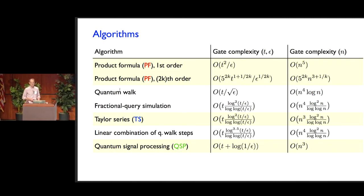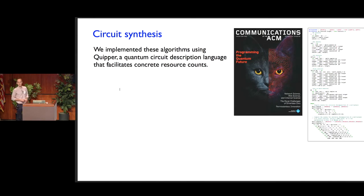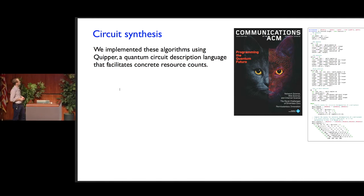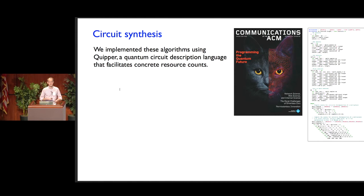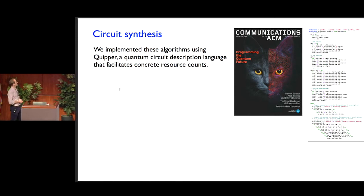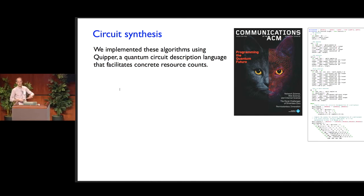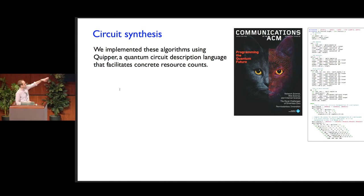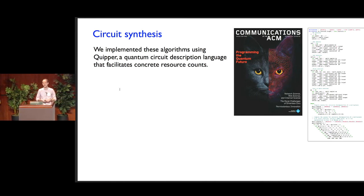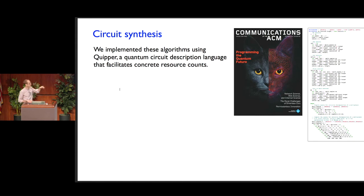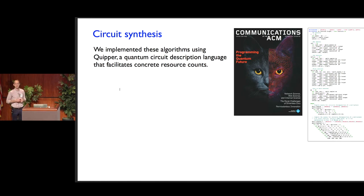What we have done is to really implement these algorithms in a very concrete way, using a quantum programming language called Quipper, which was developed in part by Julian, one of my co-authors, along with Peter Selinger and others. This is a way of writing software code that describes a quantum algorithm in a fully explicit way that can then be compiled into an explicit sequence of gates. There's a snippet of code from this implementation shown over here. All of the code is available on GitHub, so you can go download it and see really explicitly how we implemented these algorithms — and maybe you can improve the implementation.